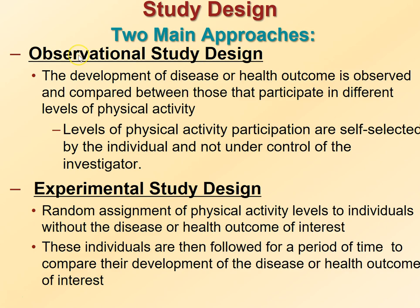There are two main approaches investigators can use to determine if physical inactivity plays a role in the development of a specific disease or condition. In the observational study design, levels of physical activity participation are self-selected by the participant. Typically, individuals will differ by characteristics, or confounders, other than physical activity participation, that may influence the disease or outcome of interest. The experimental study design is more powerful and conclusive than the observational study design because levels of physical activity are not self-selected. Individuals are randomly assigned to a group encouraged to participate in physical activity or to a reference group. All study participants are followed for a period of time and development of disease or health outcome is compared between groups.